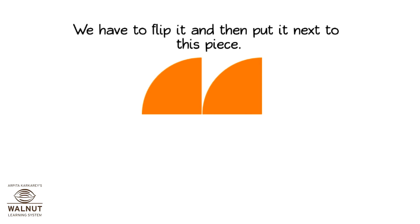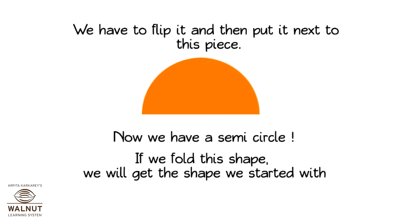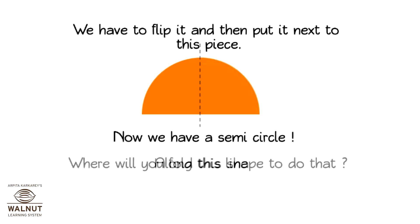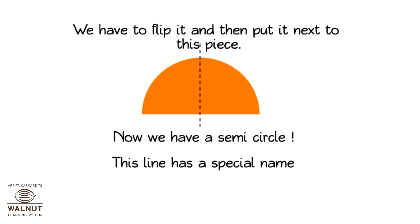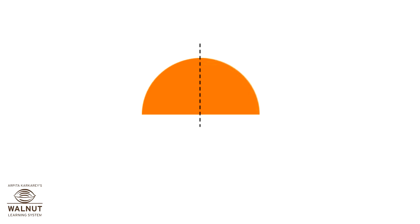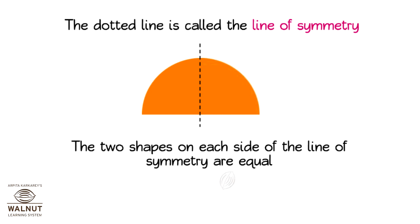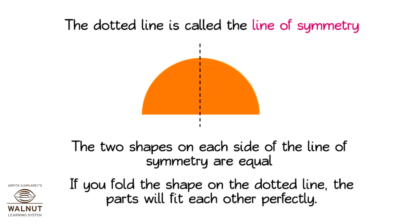We have to flip it and then put it next to this piece. Now we have a semicircle. If we fold this shape, we will get the shape we started with. Where will you fold this shape to do that? Along this line. This line has a special name — it is called the line of symmetry. The dotted line is called the line of symmetry. The two shapes on each side of the line of symmetry are equal. If you fold the shape on the dotted line, the parts will fit each other perfectly.